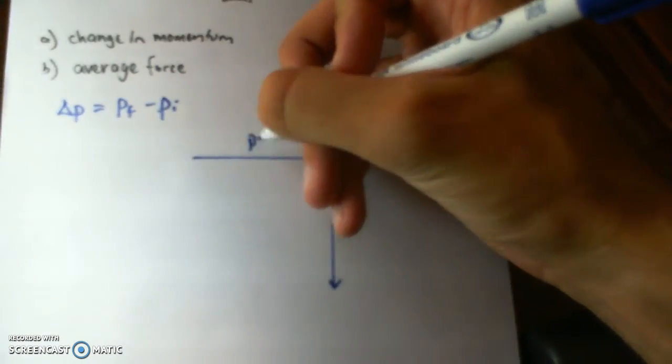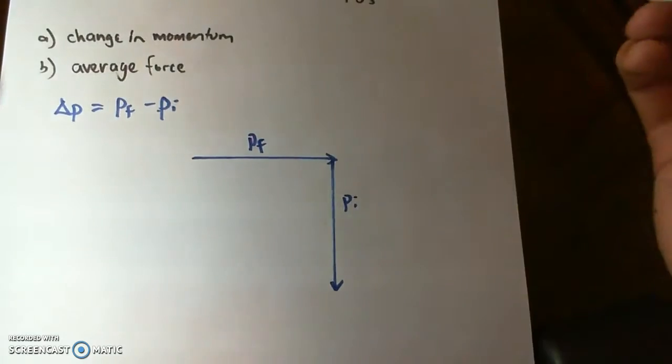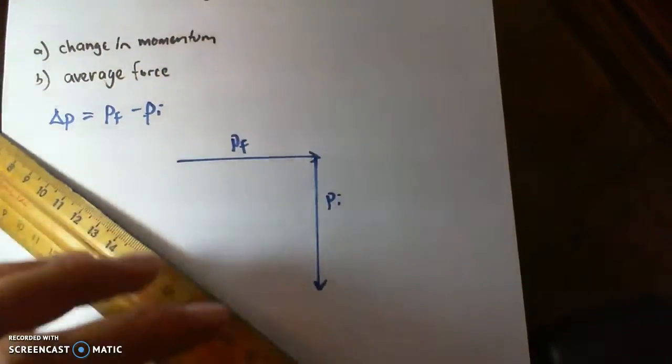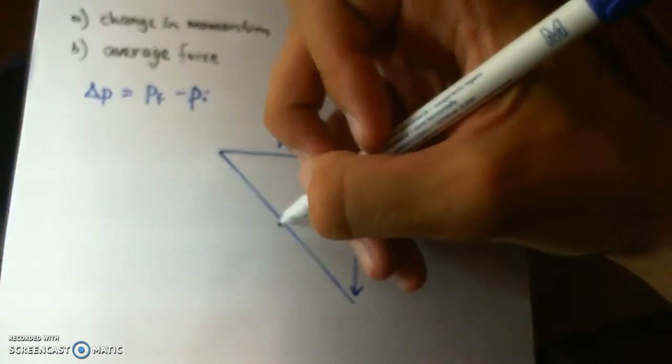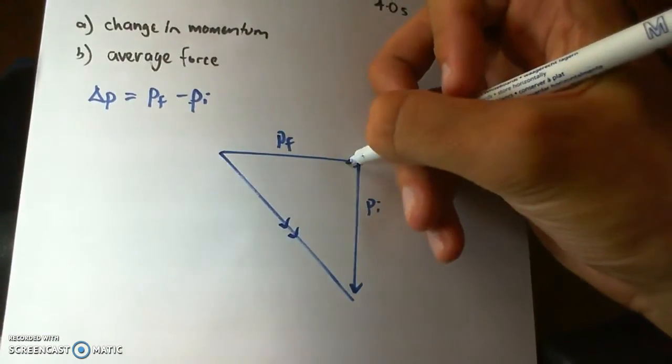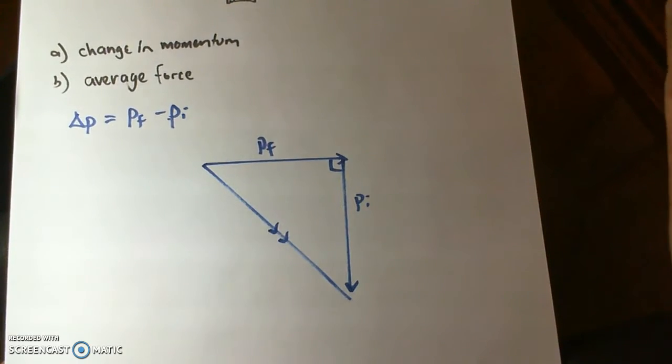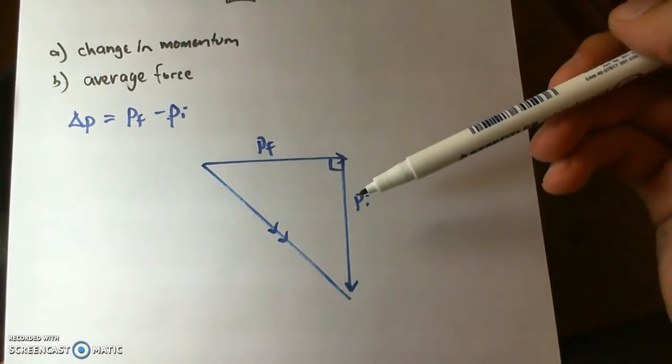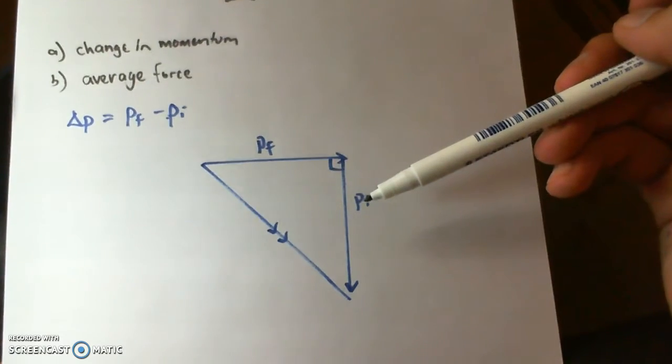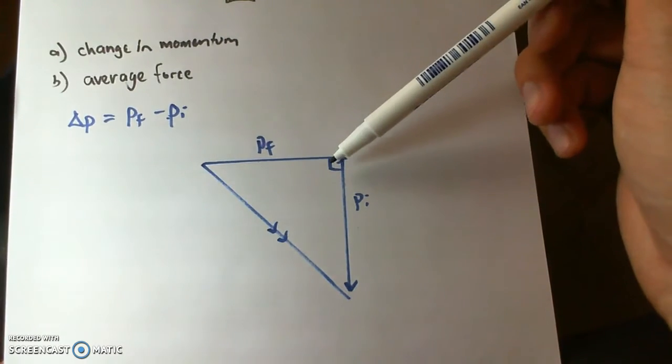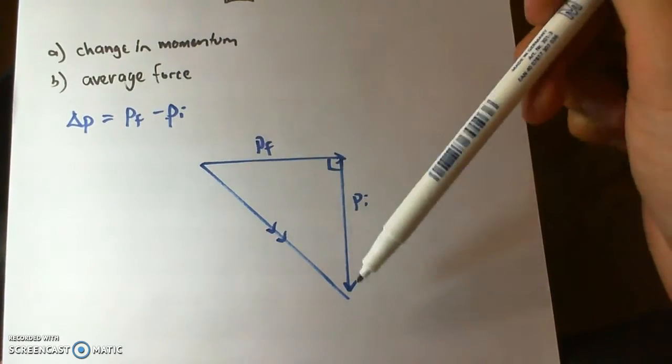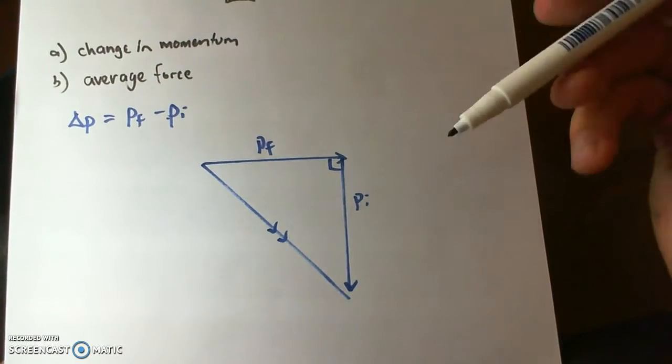So we've got the final momentum and the initial momentum. Now the result is what we get here. So due to our assumptions we know that the final and the initial momentum magnitudes are the same as the mass and the velocity have not changed. So what we get is these two values being the same magnitude forming an isosceles triangle.